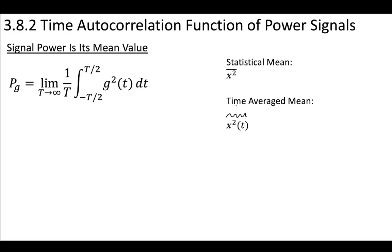One is the statistical mean, and one is the time average mean. And so if you take this signal and you find its power, we are taking something over this period, and then we're dividing it by the period. So we're doing this integral over a period, and we're dividing it by a period.